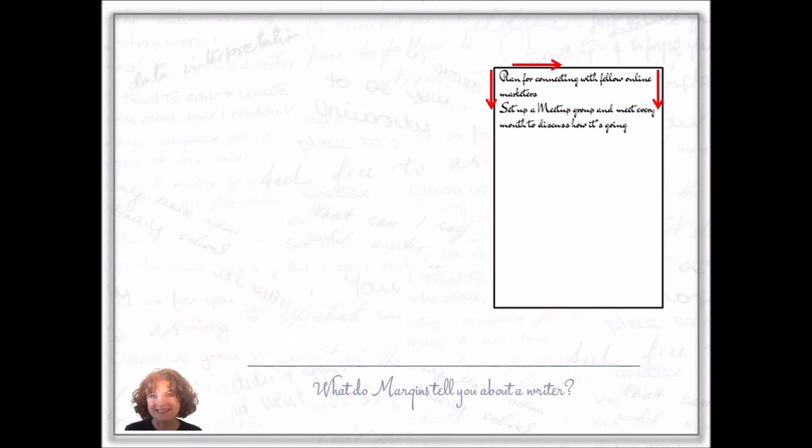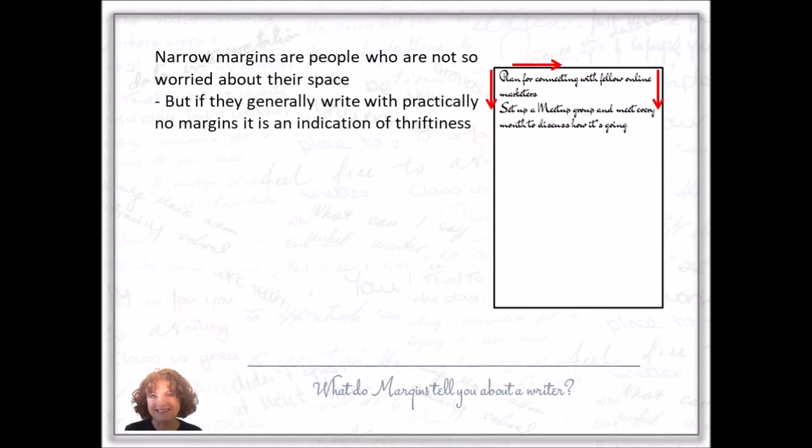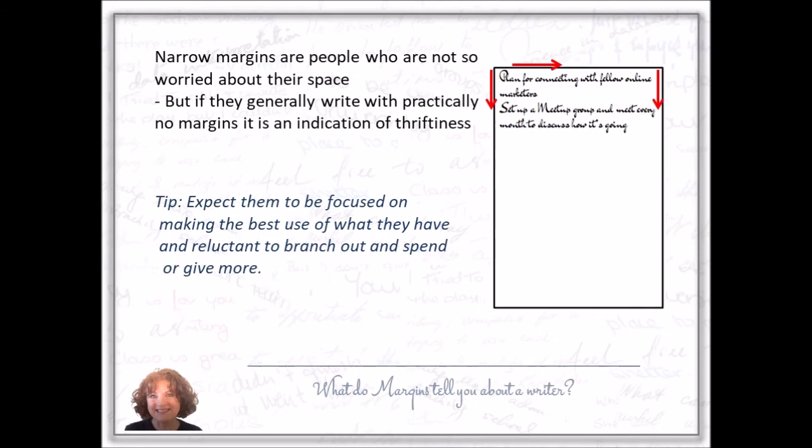Narrow margins are people who are not so worried about their space, but if they generally write with practically no margins at all, it's an indication of thriftiness. Tip: expect them to be focused on making the best use of what they have and reluctant to branch out and spend or give more.